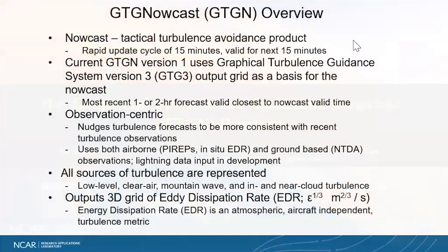To start with a brief overview of the Nowcast product: we have two products, a Turbulence Forecast product and this Nowcast product. The Turbulence Nowcast product is meant to be a technical aid to avoid turbulence in the short term. It has rapid update rates every 15 minutes and is valid for the next 15 minutes. The current GDGN system is using as input a short-term turbulence forecast from the forecast system called GTG.